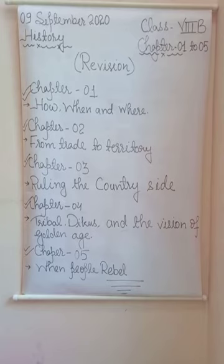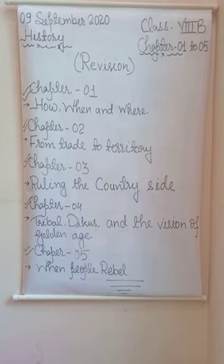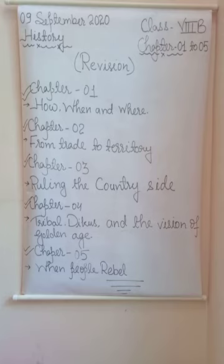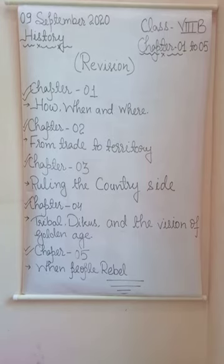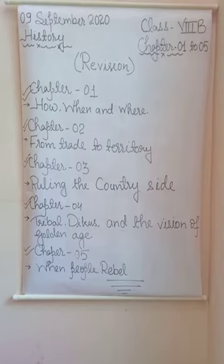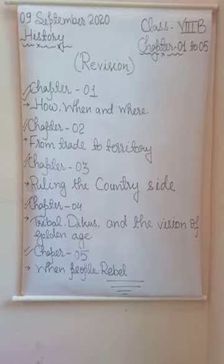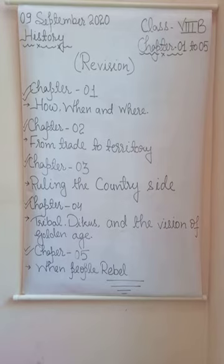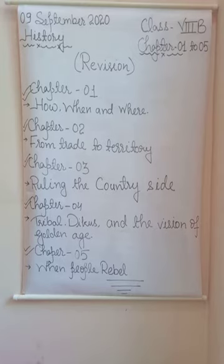Chapter number 2: from trade to territory. Aurangzeb was the last powerful Mughal ruler. After the death of Aurangzeb, the later rulers proved to be inefficient and foreign powers got the opportunity to establish their rule in India. In chapter number 2, topic number 1 is: East India Company comes East. In 1600, the East India Company was granted the right to trade with the East.